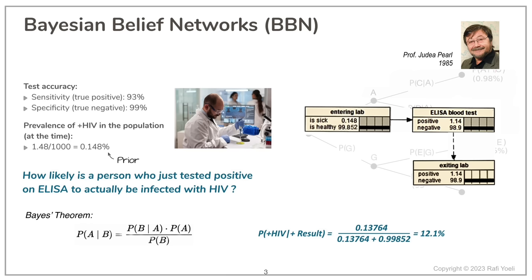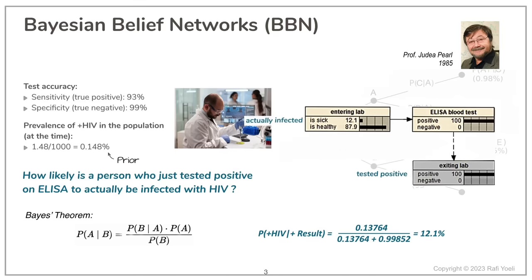Now, we can use the network instead of our tree to answer the question: what is the likelihood that a person who left the laboratory with a positive is indeed sick? In Netica, all that's needed is a mouse click on the state that says negative on either of the nodes ELISA blood test or exiting lab. This immediately enforces a 100% probability to positive in the second node. Look now at the value of the node entering lab that must exist for the test to be at 100% positive.